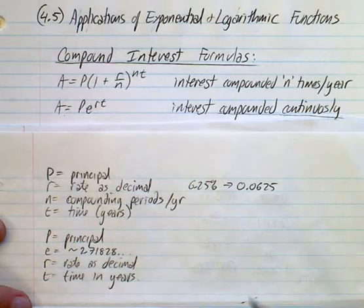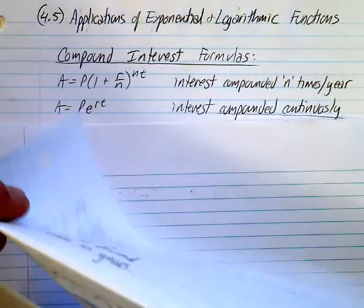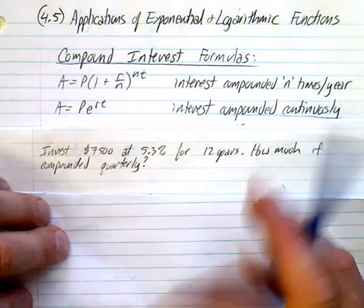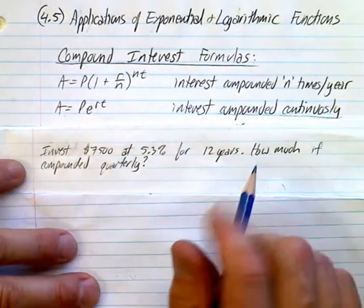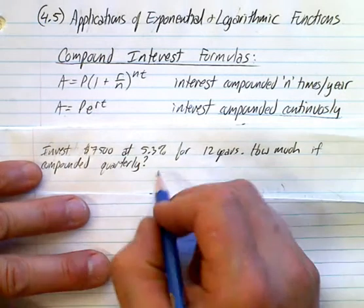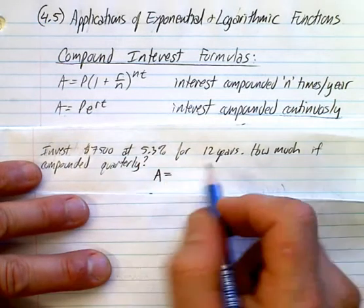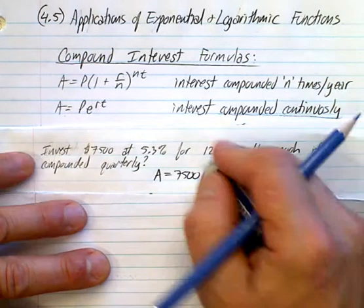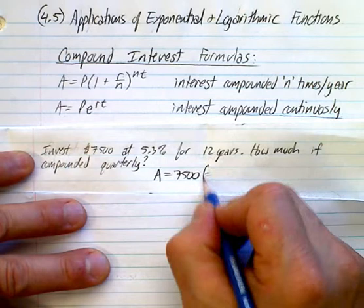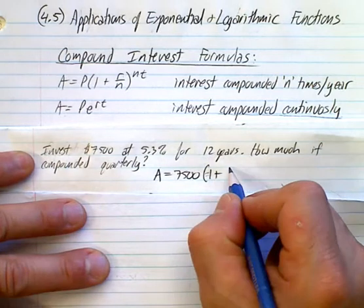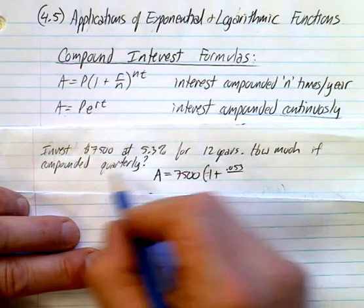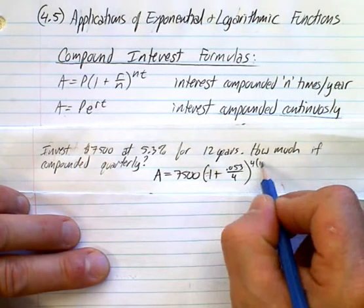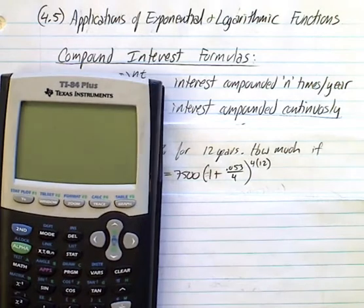Now, what we're going to do is we're going to look at a couple of questions. We'll look at this one first here and see if we can make some sense of it. You invest $7,500 at 5.3% for 12 years, how much have you compounded accordingly? So, we started off, well, we don't know what the A is. We started off with $7,500.